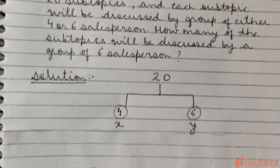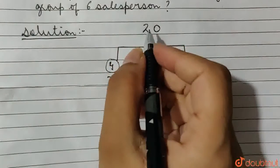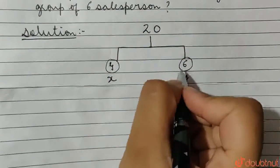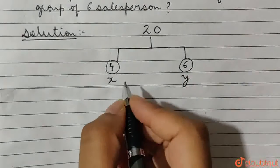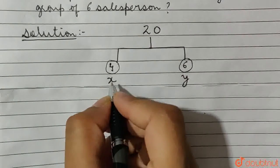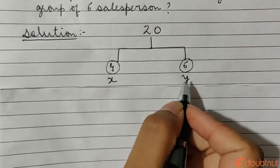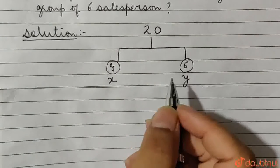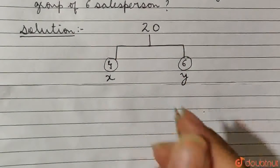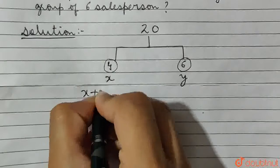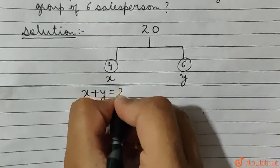We have 20 sub-topics which are discussed by either a group of 4 people or a group of 6 people. Let X sub-topics be discussed in a group of 4 people and Y sub-topics be discussed in a group of 6 people. Since the total number of sub-topics is 20, X plus Y equals 20. This is the first equation.